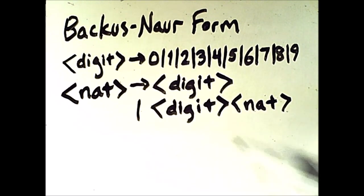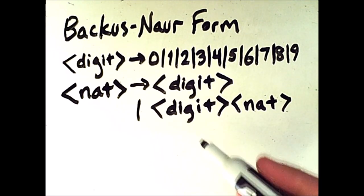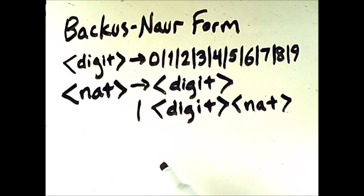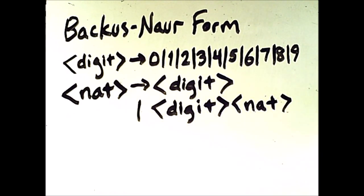So now our grammar has two rules, or productions, or production rules, as they're sometimes called. We have one rule for digit, and then another rule for NAT, which I'm using to represent natural number. Natural numbers are integers from 0 and up, basically the non-negative integers.